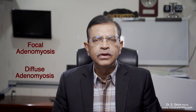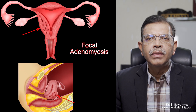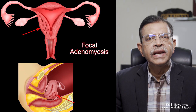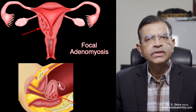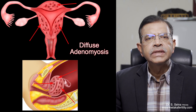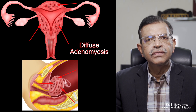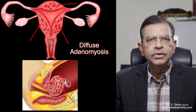There are two types of adenomyosis, namely focal adenomyosis and diffuse adenomyosis. Focal adenomyosis is when adenomyosis is found in only one part of the uterus. In diffuse adenomyosis, endometrial tissue is found throughout the entire uterus.